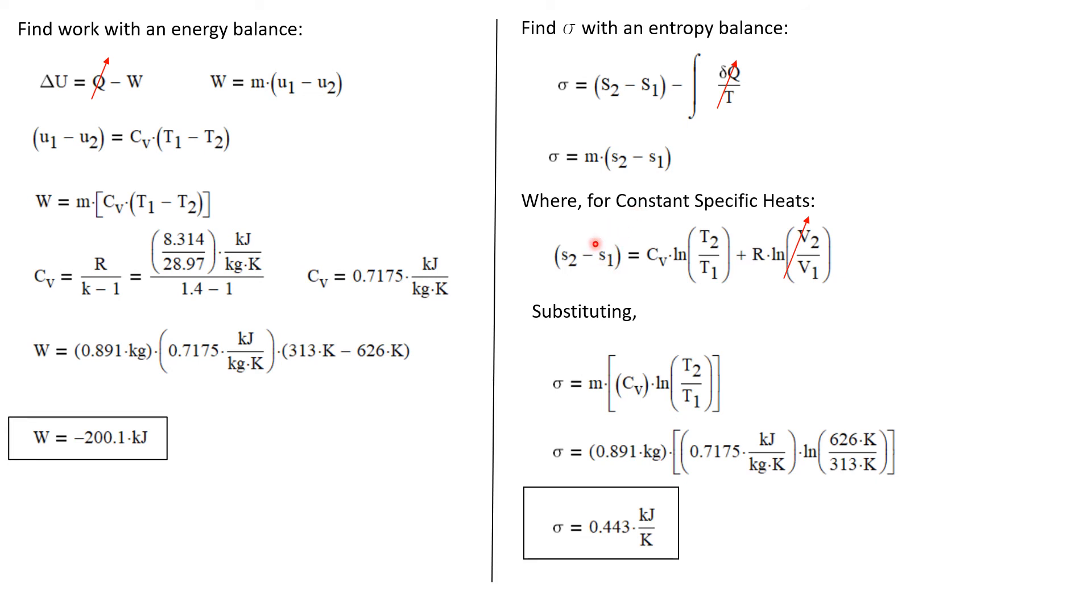We can calculate this term S2 minus S1. We've done that previously where this term we got from tables as S0 of T2 minus S0 of T1. But because we're assuming constant specific heats, we don't need to go to the table. We don't need S0 values here. This term can be computed as C sub V times the natural log of T2 over T1. So this is a new equation that we're seeing in this series of problem solutions. And then we add to that the gas constant times the natural log of V2 over V1.